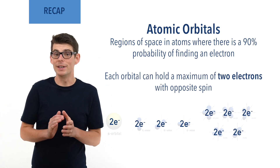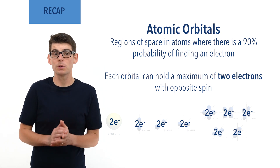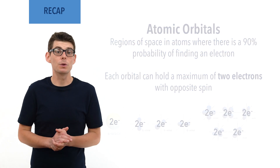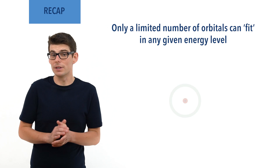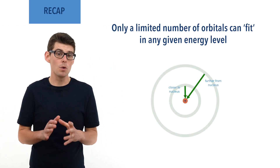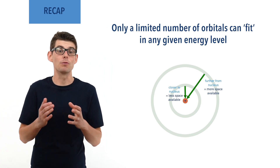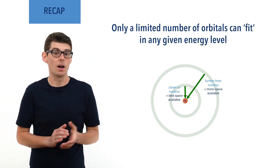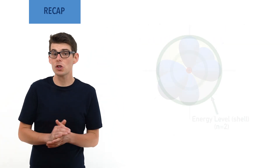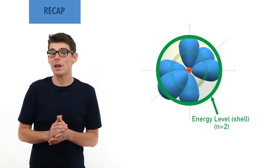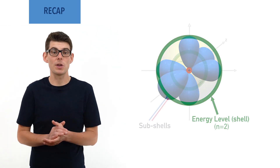Electrons are negatively charged and repel each other, meaning only a limited number of orbitals can fit around a nucleus in a given energy level. As distance from the nucleus increases, however, there is more space available, meaning more orbitals can fit and be arranged around the nucleus in higher energy levels. Orbitals in a given energy level can have different shapes, meaning they can also have slightly different energies and belong to what are called subshells.